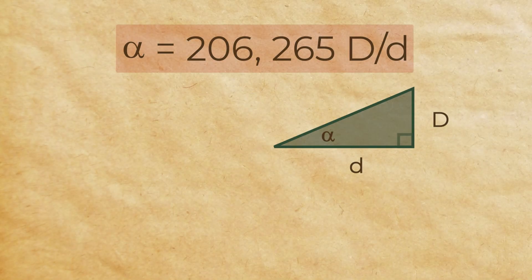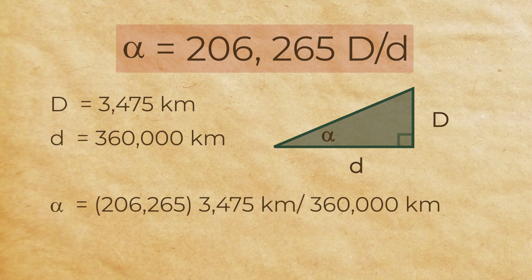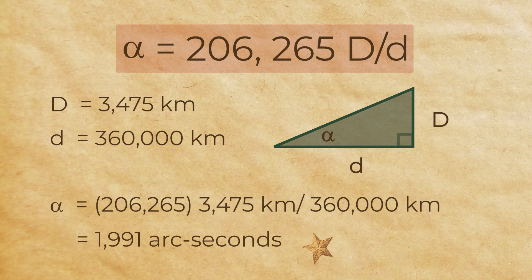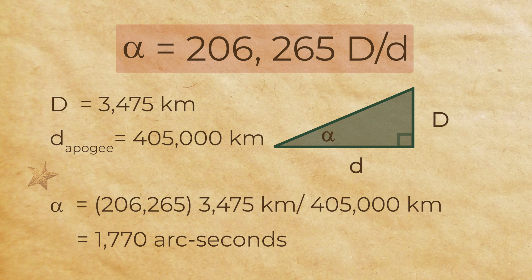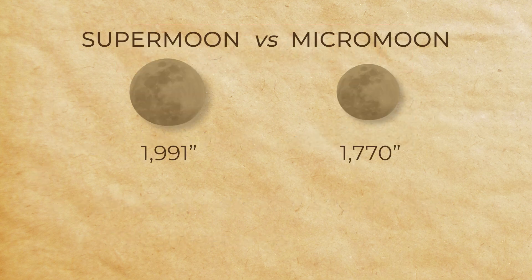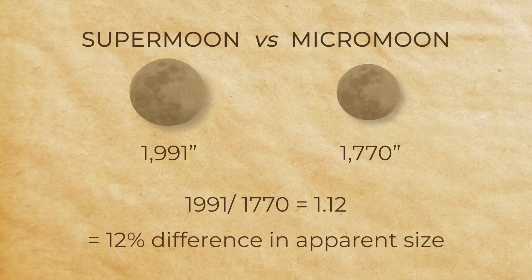Let's calculate the apparent size, or angular size, of the supermoon. Our formula is alpha equals 206,265 times D over d. So at perigee, alpha equals 206,265 times 3,475 kilometers divided by 360,000 kilometers, which equals 1,991 arc seconds. Let's compare it with a micromoon seen at apogee: alpha equals 206,265 times 3,475 divided by 405,000 kilometers, which equals 1,770 arc seconds. Now we can see the maximum difference: 1,991 divided by 1,770 equals 1.12, or about a 12% difference between the biggest and smallest apparent size.